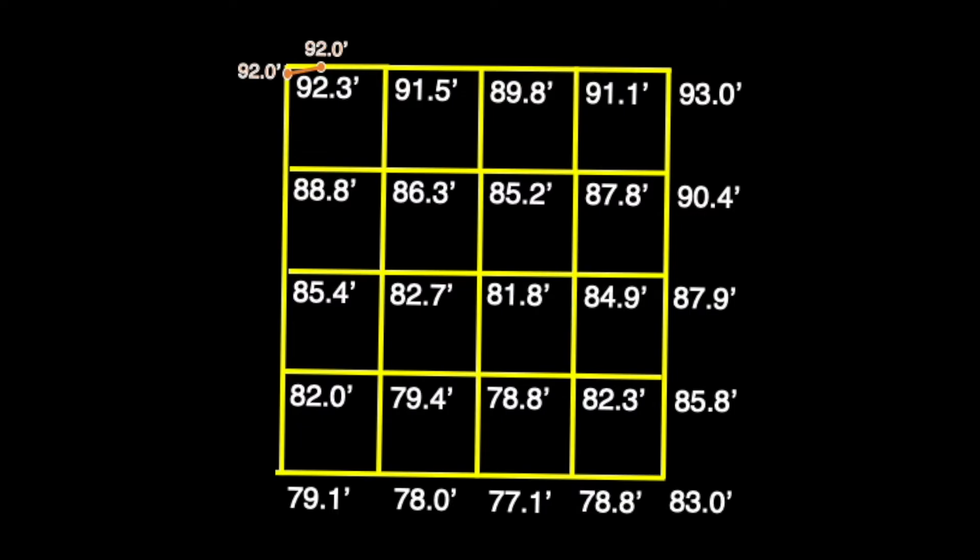After connecting the dots, we have the first contour line of 92 feet revealed in the far corner of our grid. With our one foot contour interval, we'll move on to find our next contour line downhill of it at 91 feet.